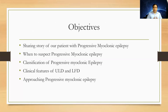We'll discuss the clinical features of the two common progressive myoclonic epilepsies — Unverricht-Lundborg disease and Lafora body disease — and lastly, we'll briefly discuss the approach to progressive myoclonic epilepsy.